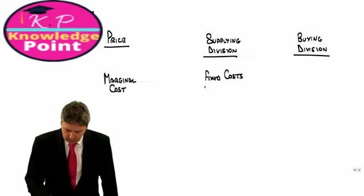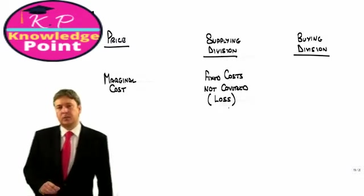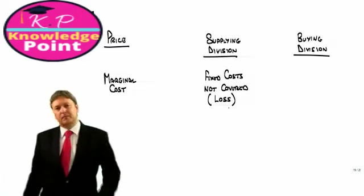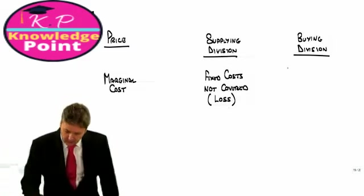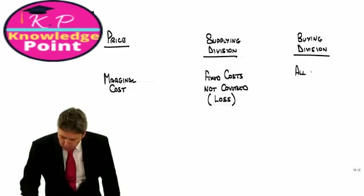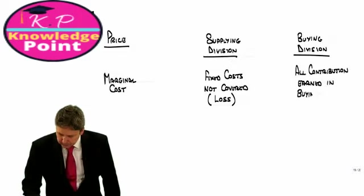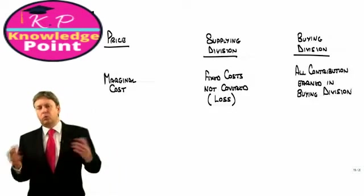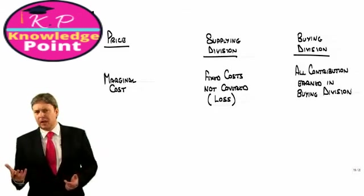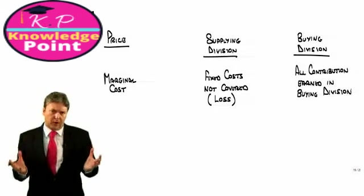Fixed costs are not covered. And therefore, we would expect to be in a loss-making position. Whereas if we're looking at it from a buying division, I'm terribly happy here. All contribution is earned in the buying division. So the supplying division would be extremely unhappy and the buying division would be almost euphoric with happiness.